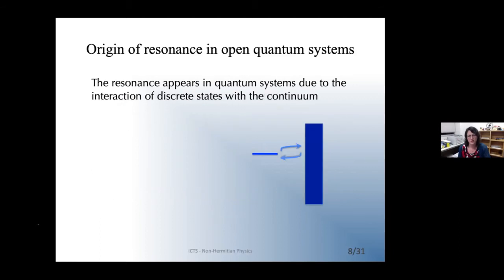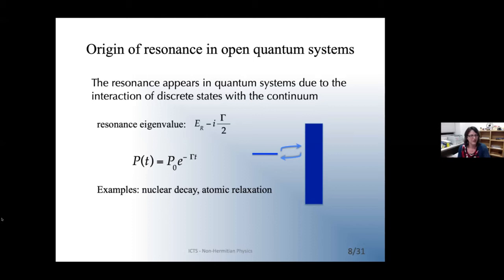More specifically: some generic continuum exists, and a level from the discrete part of the system interacts with it. Because the energy of this state is within the continuum, they resonate — that's where the word resonance comes from. The resonance forms as a kind of hybrid between the two parts, giving a complex eigenvalue whose imaginary part gives rise to exponential decay.